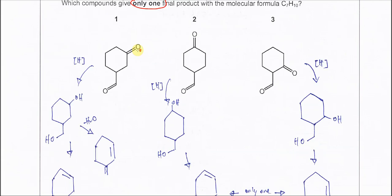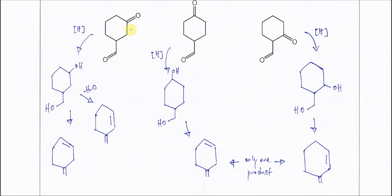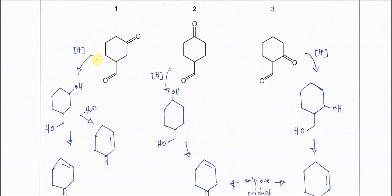Let's check the first compound. After it's reduced, this ketone will form a secondary alcohol and this aldehyde will also form an alcohol — a primary alcohol. After that, this compound will undergo dehydration. This OH will be removed with this H, and since there is one hydrogen here, it will form this C=C double bond.